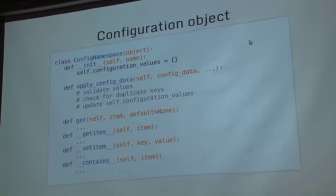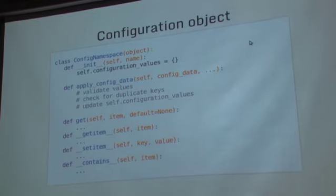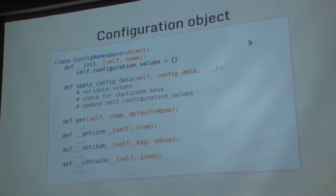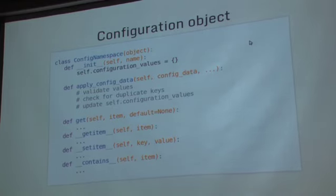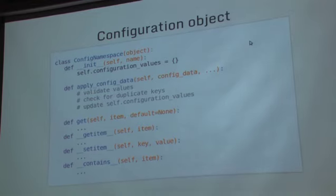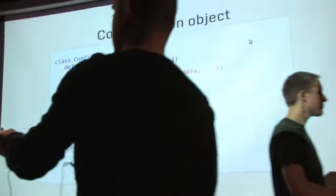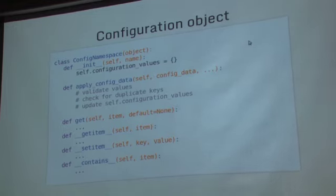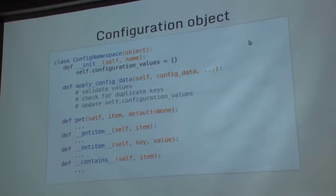So if I were to extend a dictionary, I'd have to worry about the entire interface of a dictionary, which is 20 plus methods. I kind of want to have a lot more fine-grained control over how people interact with this object, and I also don't want to have to worry about supporting the entire dictionary interface. So by composing, I can choose to implement a few of the dictionary-like methods and not worry so much about the ones I don't care about. We've got this configuration namespace object.